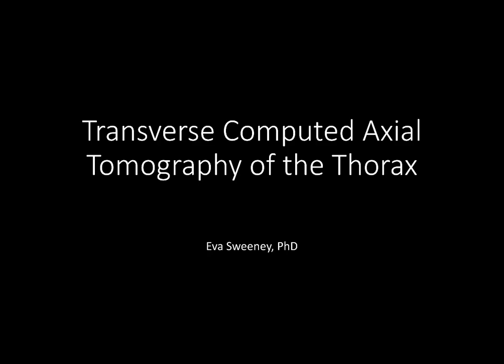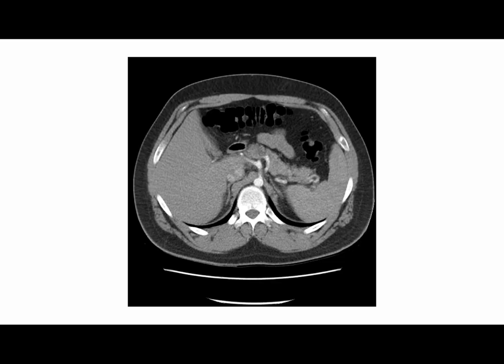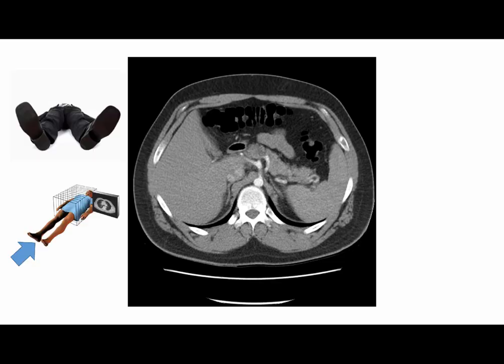This presentation will examine the anatomy visible in the transverse plane of a computed axial tomographical image of the thorax. Transverse CT images are always observed from this orientation, as if we are sitting at the patient's feet. Therefore, this is right and this is left. This CT is of a 25-year-old male and contrast medium was injected prior to acquisition. Typically, contrast medium is an iodine-rich solution injected into the patient via an antecubital vein, which allows us to better visualise vessels.